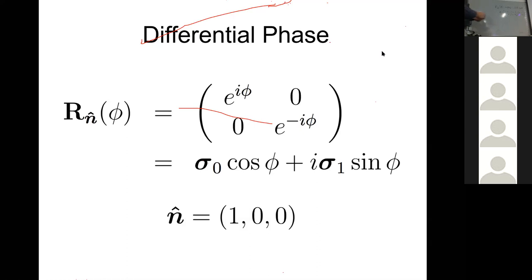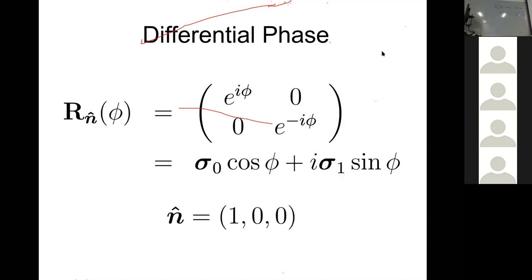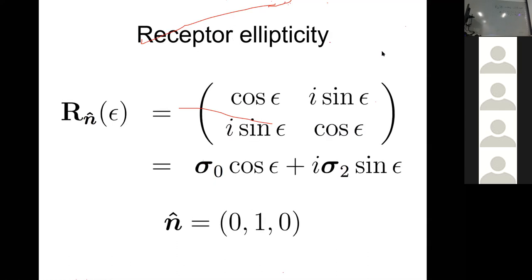That's where the unit vector n = (1,0,0) comes from — there's no sigma_2 or sigma_3 component in the differential phase transformation. But there is when we consider receptor ellipticity. This rotation matrix has i*sin(epsilon) terms on the off diagonal, and that's the same as introducing opposite senses of ellipticity to the two receptors. In each of these slides, only n-hat is changing.